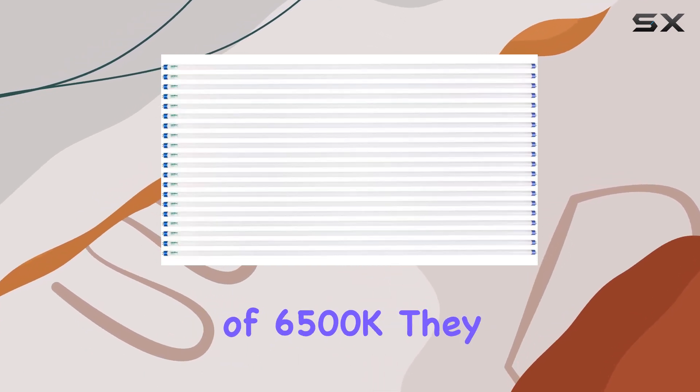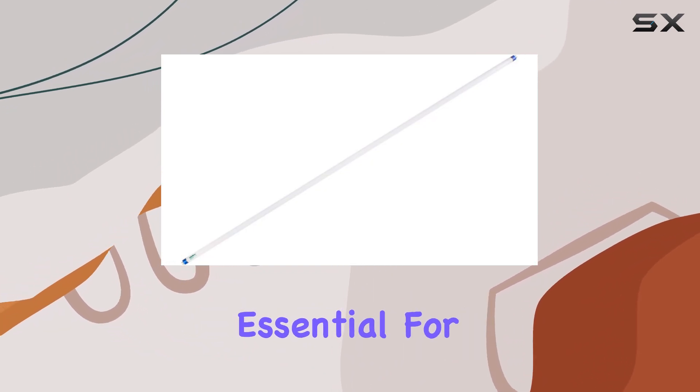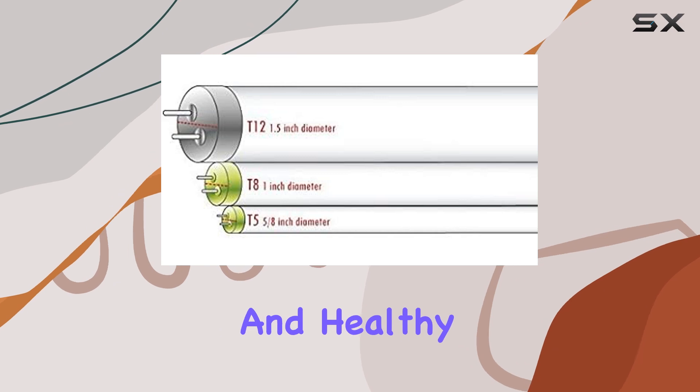With a color temperature of 6,500K, they emit a cool white light that mimics natural daylight, essential for encouraging robust foliage and healthy stems.